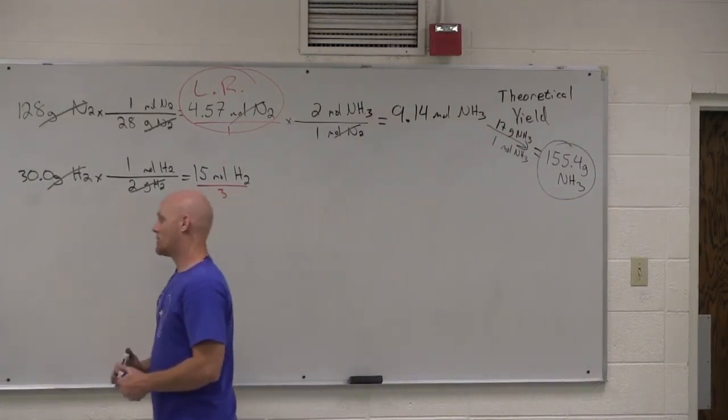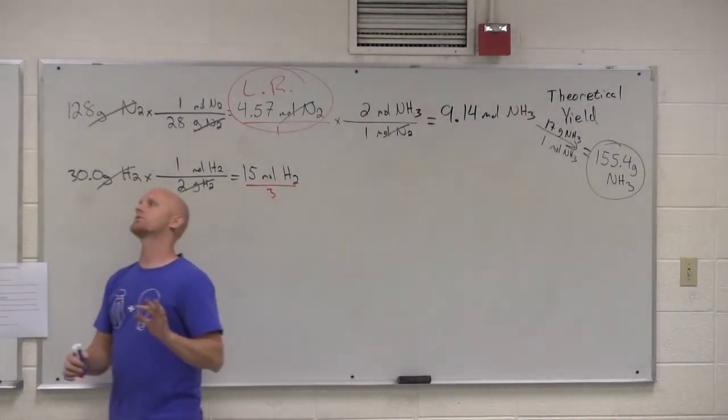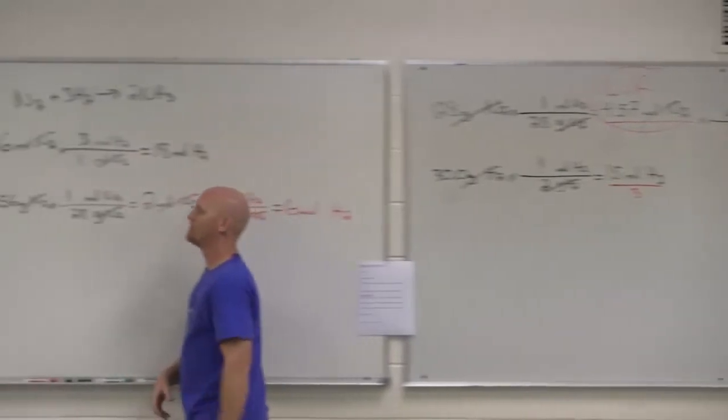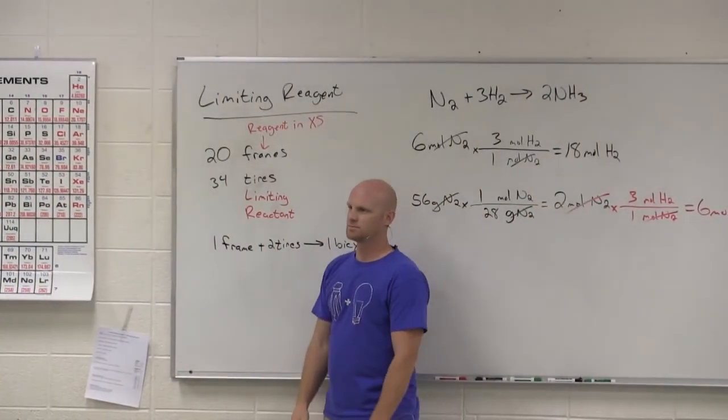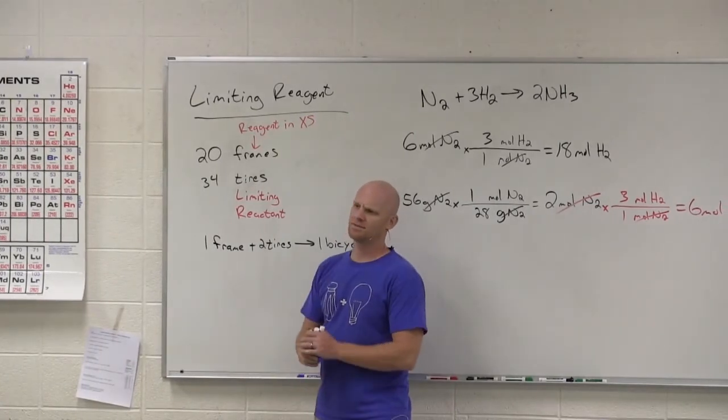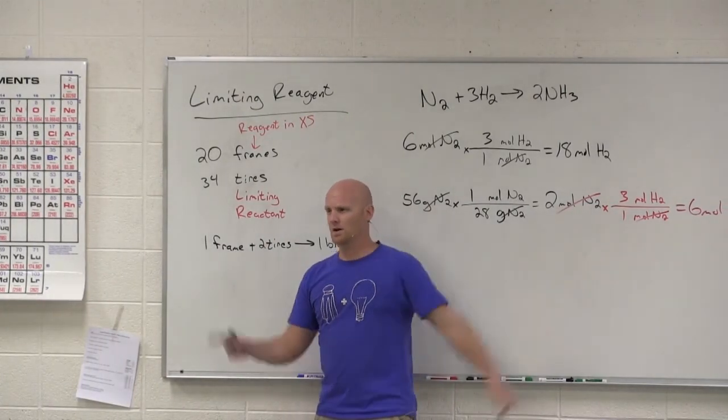And now, the hard question. How much of the reagent in excess is left over? So, let's go back in time for a minute. Back to talking about bicycles, because this was easier. How many frames were left over? Three. Great. How'd you do that? You just did it in your head. No calculator needed. It's going to be way harder over here. How did you do this in your head?